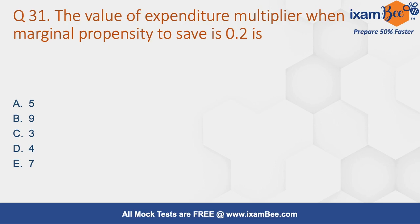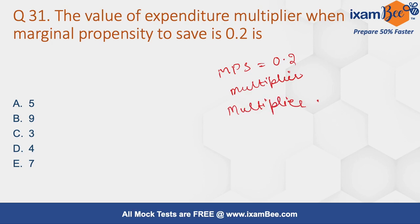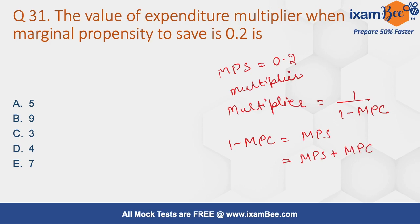In this question, we have to find the value of the expenditure multiplier when we are given the marginal propensity to save. Here MPS is given as 0.2 and we have to find the value of the multiplier. The formula to calculate the multiplier is: multiplier equals 1 divided by (1 minus MPC), and since 1 minus MPC equals MPS, putting the value of MPS gives us an expenditure multiplier of 5. So A is the correct answer.